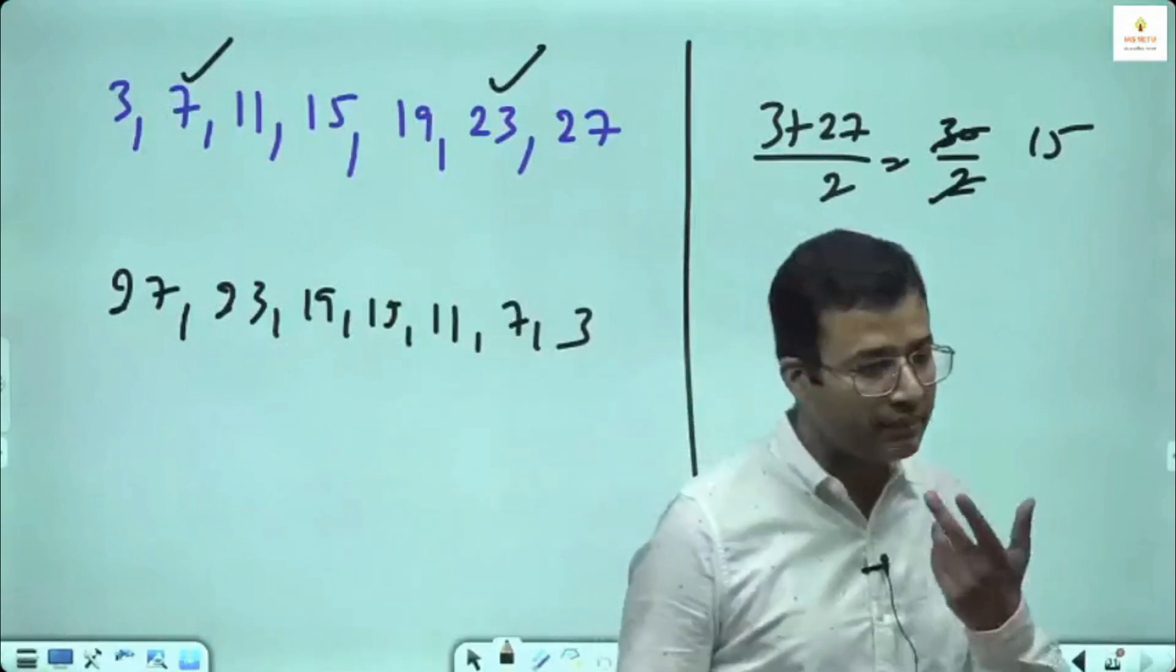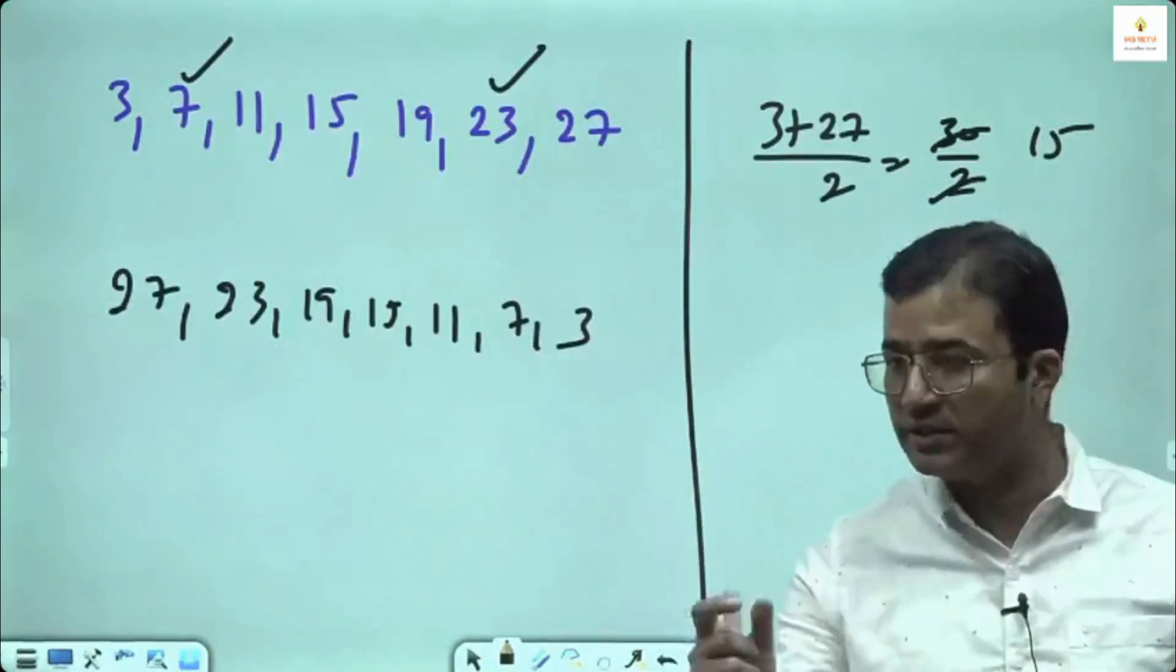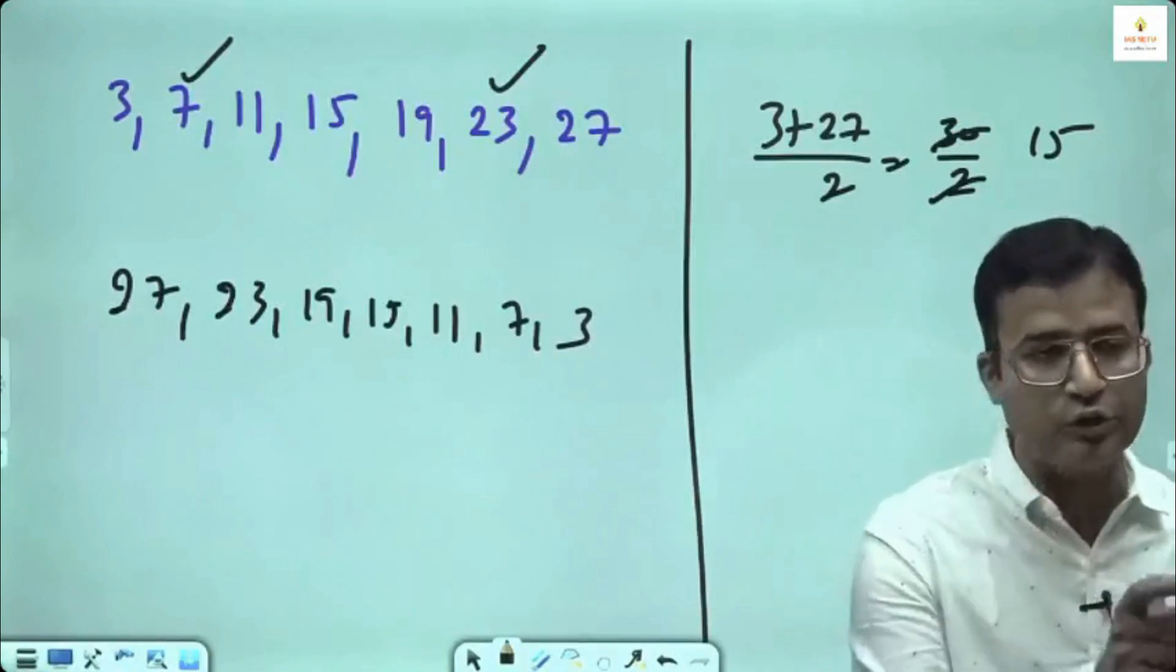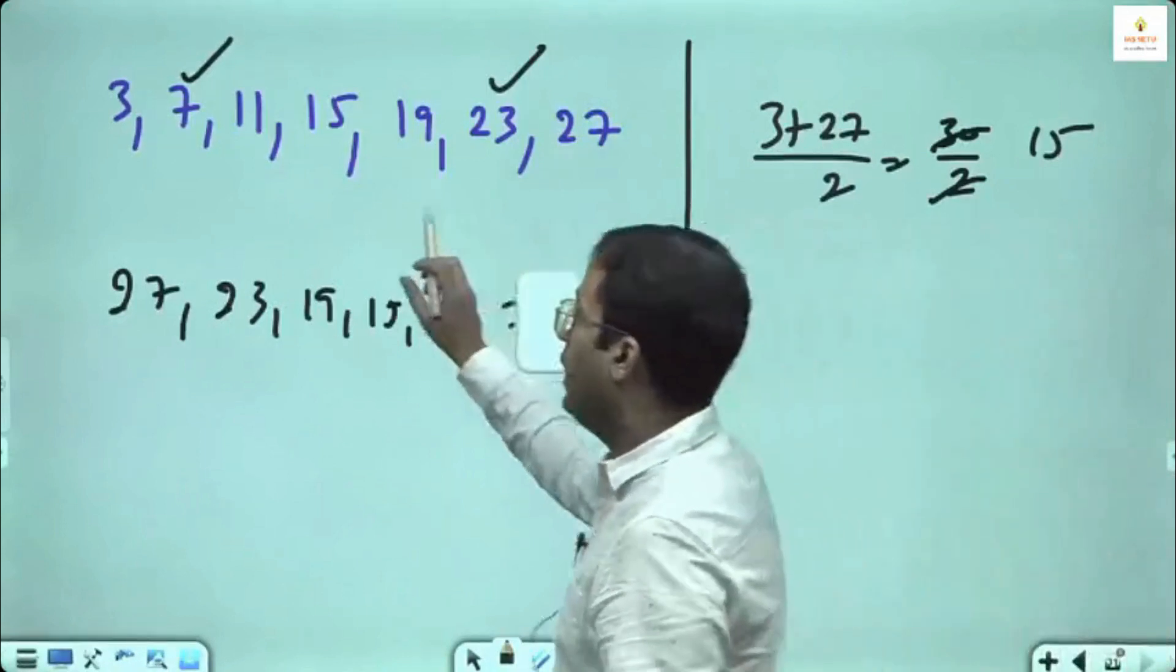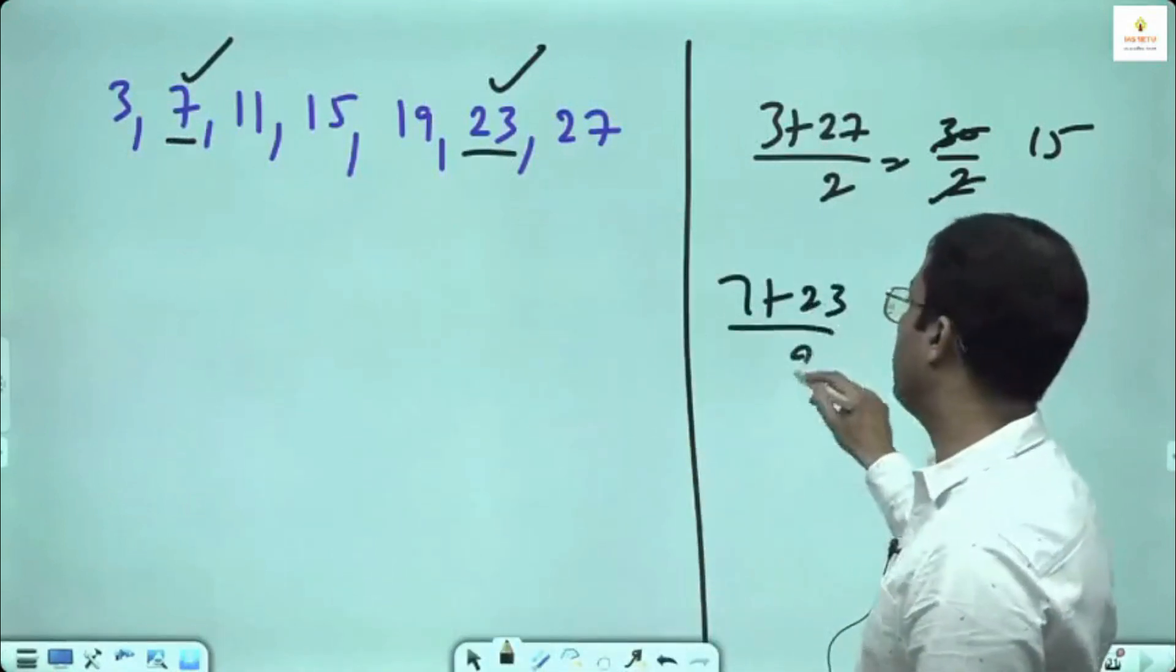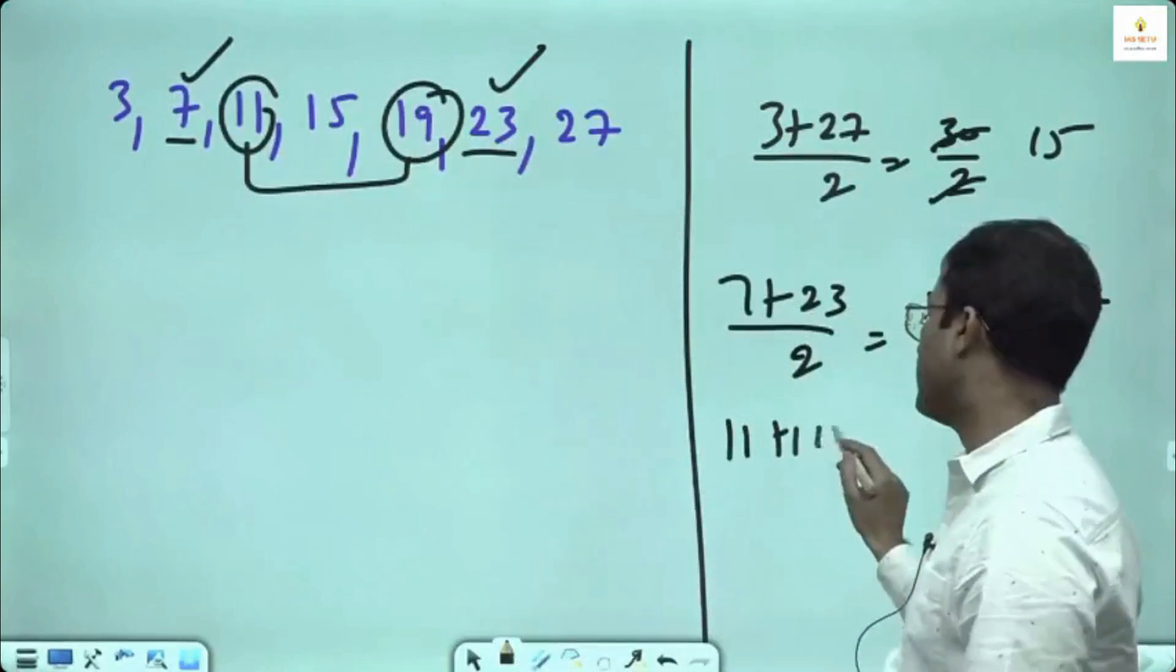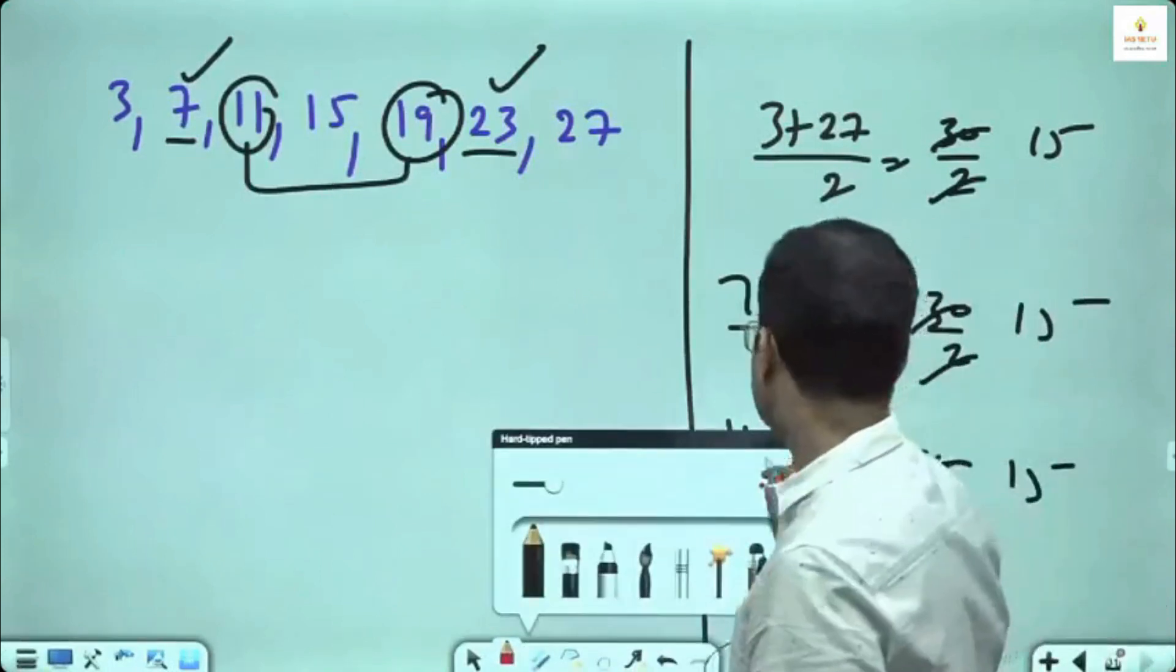AP either will be ascending or descending with a common difference constant. The gap between them has to be constant. Then only you can apply the concept of AP. Second term make pair with second term, 7 plus 23 divided by 2, 30 divided by 2 gives you average 15. Third term make pair with the third last, 11 plus 19 divided by 2, 30 divided by 2, 15.